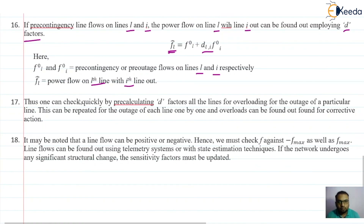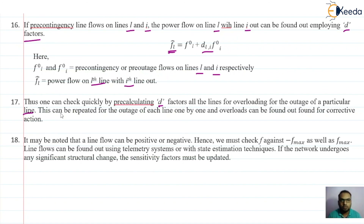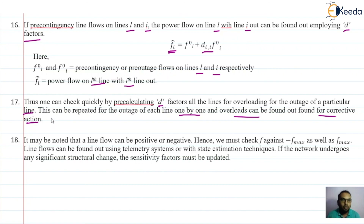With this, one can quickly check by calculating the d factor for all lines for overloading due to outage of a particular line. This can be repeated for the outage of each line one by one, and overload can be found out for corrective action. It may be noted that the line flow can be positive or negative; hence we must check f against negative f_max as well as positive f_max — that is the line flow capacity.